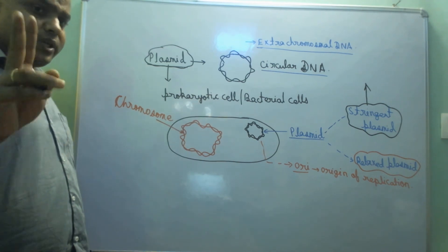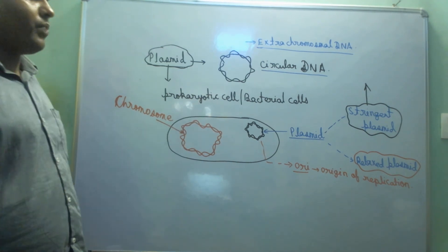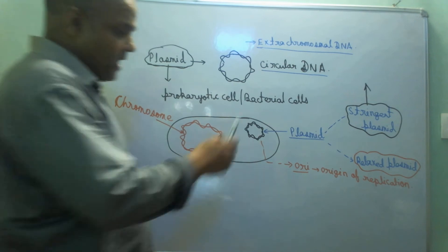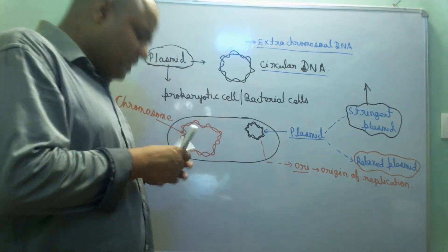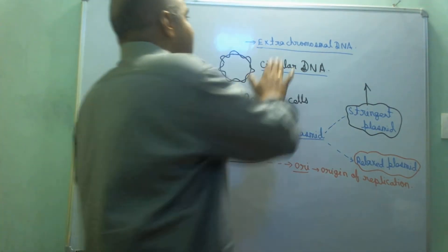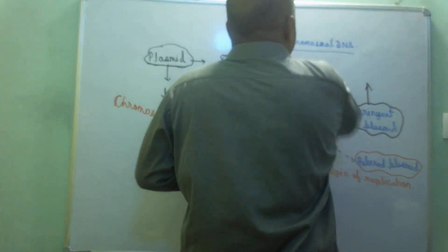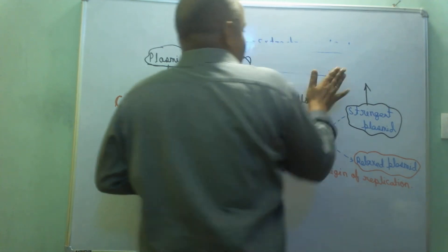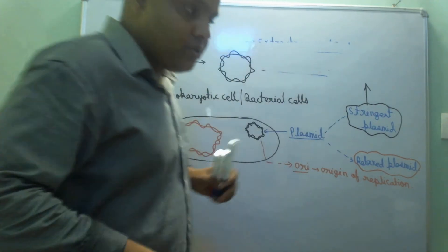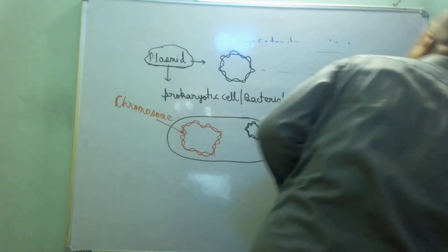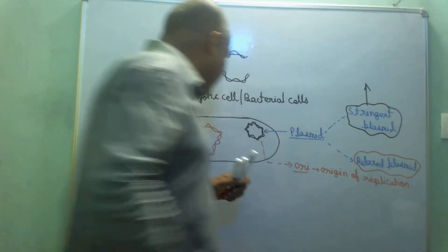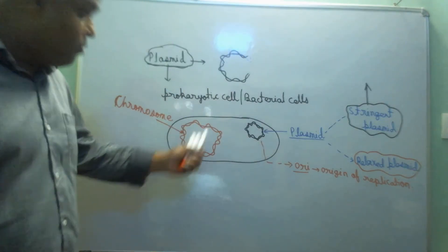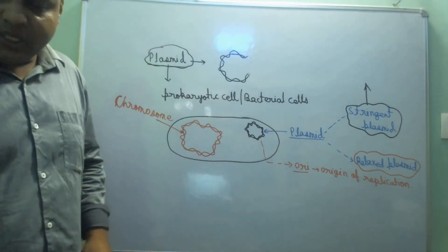This plasmid is actually of two types. The first type of plasmid is called stringent plasmid. Stringent plasmid does not have its own origin of replication. It depends on the main chromosome for replication.